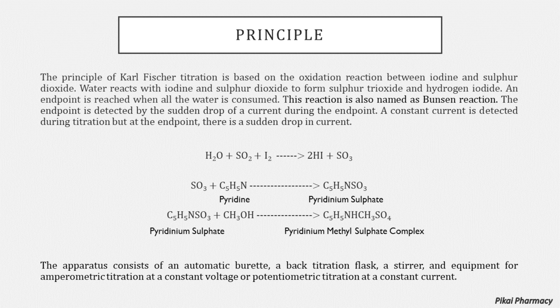The water from the analyte reacts with sulfur dioxide and iodine to produce hydrogen iodide and sulfur trioxide. When all the water is consumed in this reaction, there is a sudden drop of current that happens at the endpoint. A constant current is detected during the whole titration process, but at the endpoint there is a sudden drop in current when all the water gets consumed.